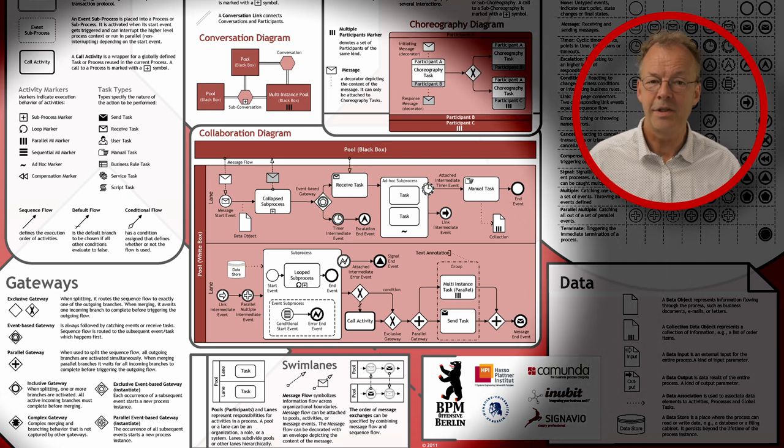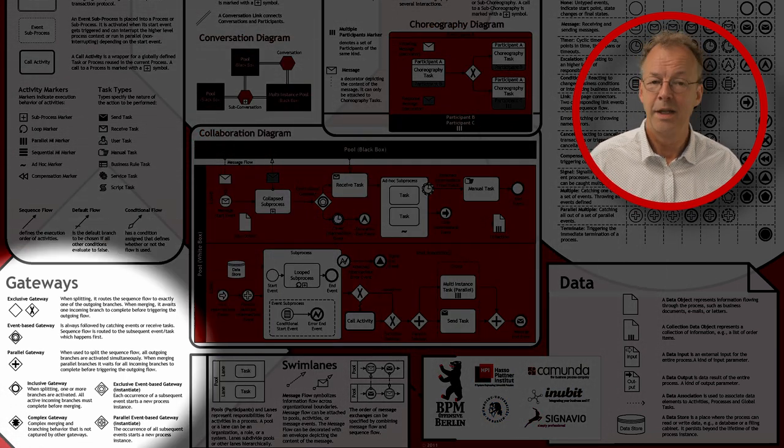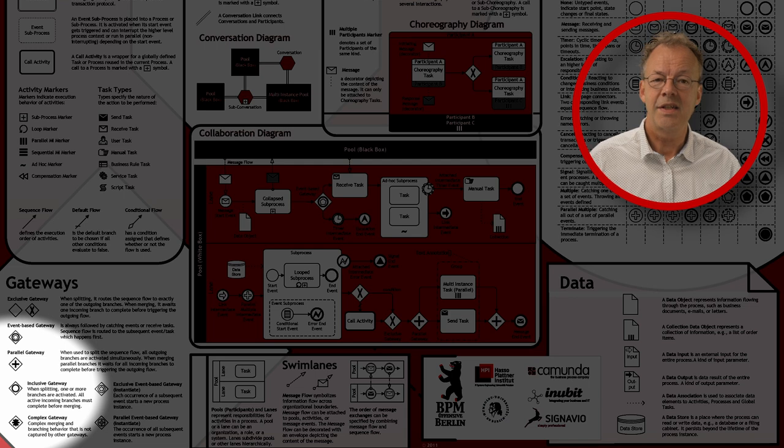In BPMN, this can be modeled in three different ways. The first way is with a splitting inclusive gateway.